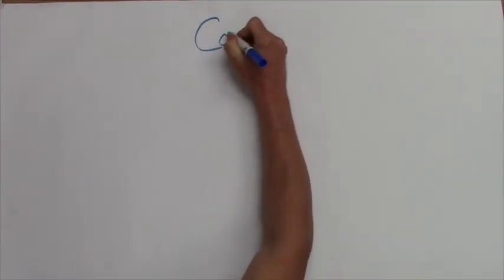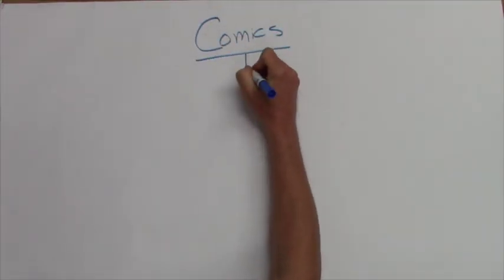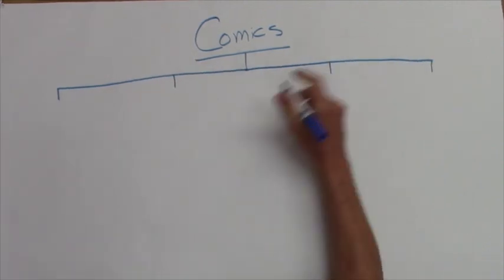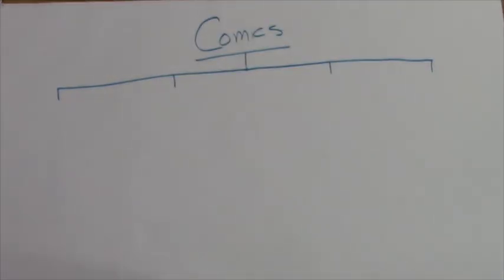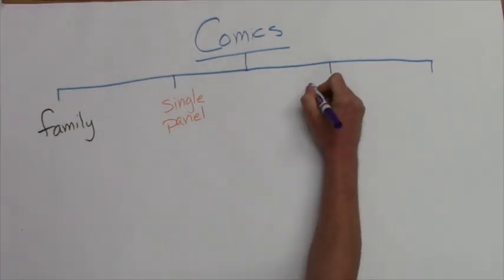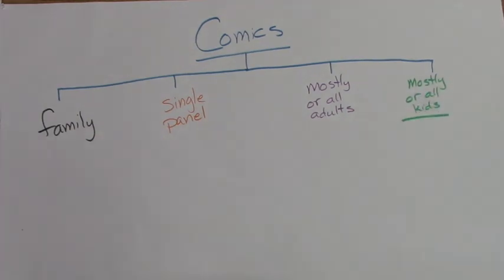Tree maps can also help you think about something in new ways by classifying. Did you ever notice that there are certain types of comics in the Sunday paper? Some are about families. Some are single panel. Some are mostly or entirely about adults or kids.